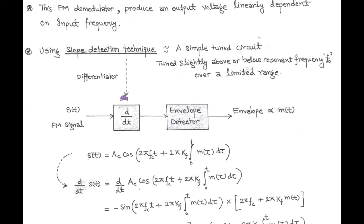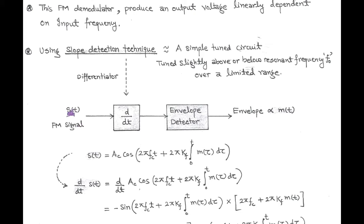In the first stage, we use slope detection technique by using a simple tuned circuit. This circuit is tuned slightly above or below resonant frequency F0 over a limited range. The input of the differentiator is FM wave denoted by the equation S(T) = AC·cos(2π·FC·T + 2π·KF·∫m(τ)dτ).